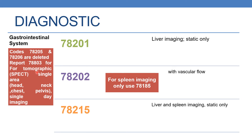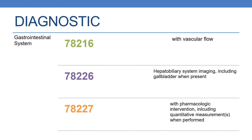The next code is 78215, which deals with liver and spleen imaging, static only. Coming to 78216, it deals with liver and spleen imaging with vascular flow. The next code is 78226, which deals with hepatobiliary system imaging including gallbladder when present, with pharmacologic intervention, including quantitative measurements when performed.